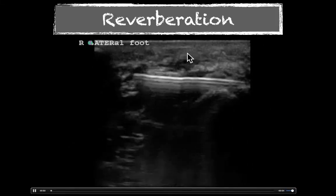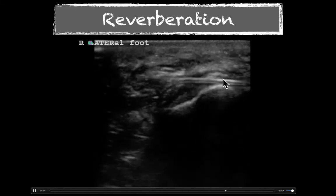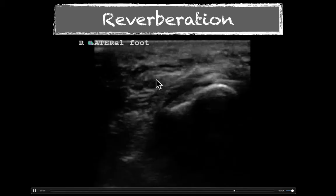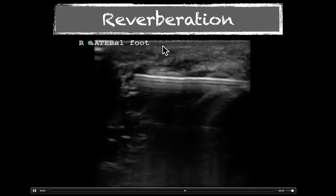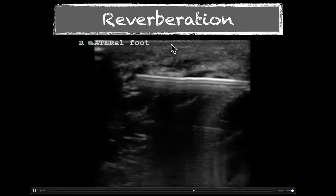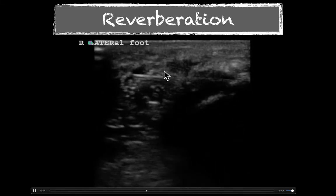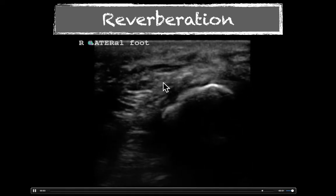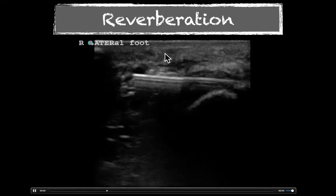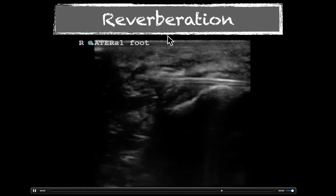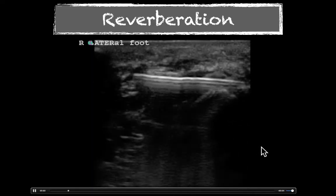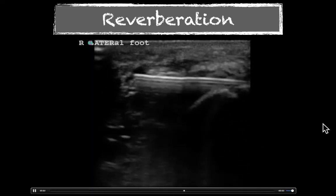We have reverberation artifact. What happens is you have a structure — this will often be seen in foreign bodies or during needle placement. An ultrasound beam travels down, some of it hits the needle and brings it right back up to the probe so you see the structure, but some of it makes it past the needle, comes back, hits the needle, bounces back, hits the tissue, and makes it back up to the machine. It kind of ping-pongs back and forth and creates what looks like additional structures down below, as you see coming off the needle.